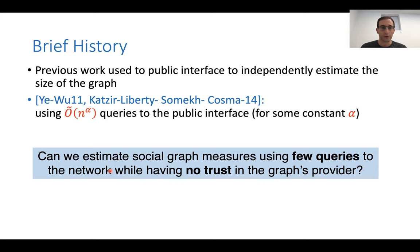There's a lot of works relevant, but just really a brief history. There exists works that use this public interface to get an independent estimate of the size of the graph and also of many other measures. Just for example, Yi et al. and Katzir et al. They use this public interface. They did something like poly n queries, so n to the alpha queries for some small constant alpha like half or improved by Katzir to one over four. And using this, they were able to estimate the size of the graph.